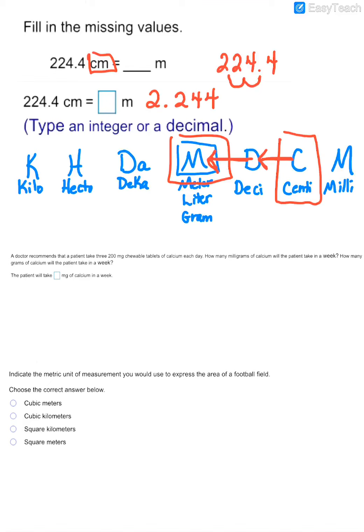In this next example, we have a doctor recommends that a patient takes three 200 milligram chewable tablets of calcium each day. So notice three a day, that would be 600 milligrams a day. And so the first question says, how many milligrams of calcium will the patient take in a week? Well, there are seven days in a week.